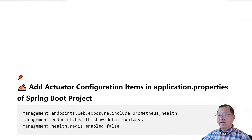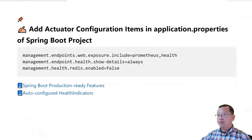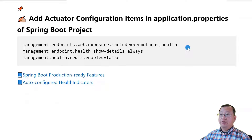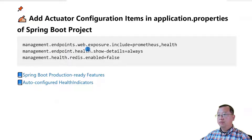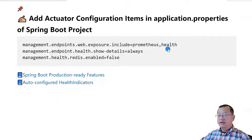Let's go through the items one by one. Three configuration items are used in my demo. First: management.endpoints.web.exposure.include, values: prometheus and health. We only expose the Prometheus and health APIs.